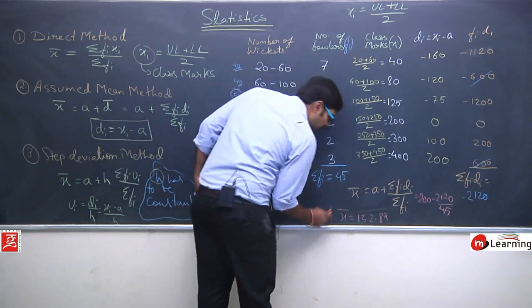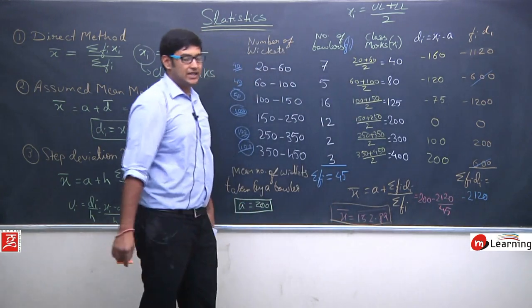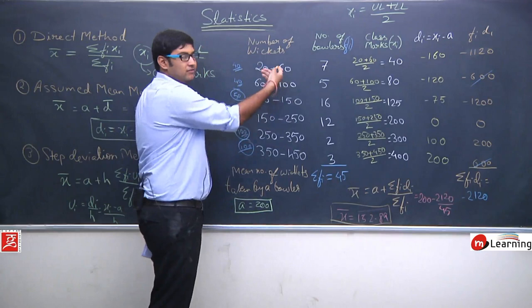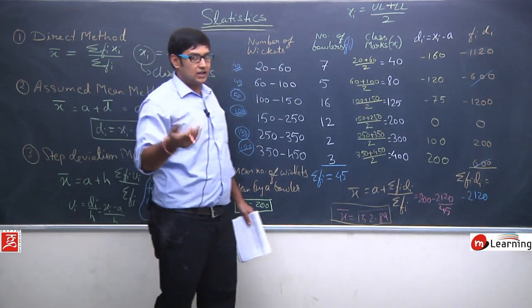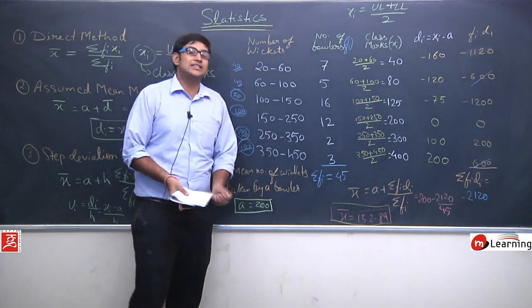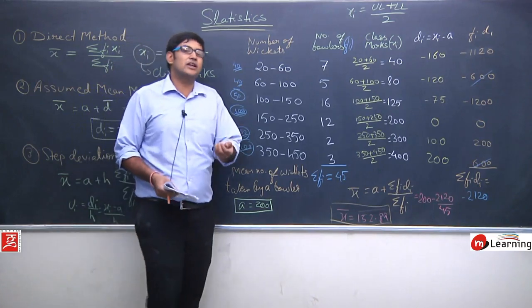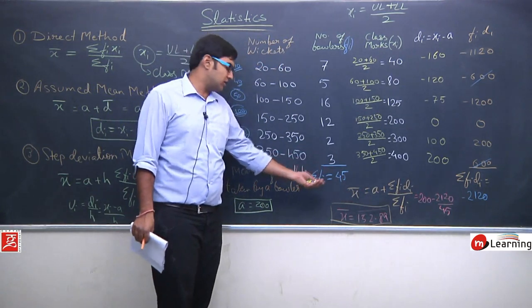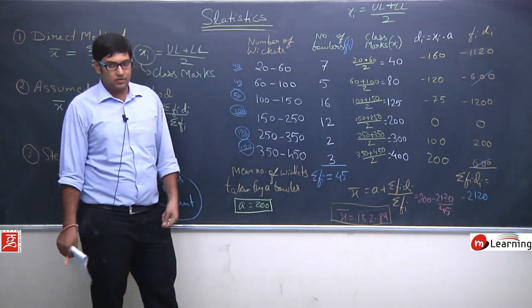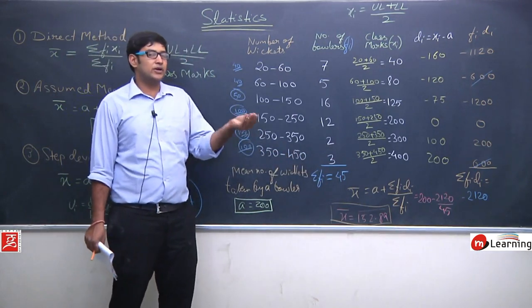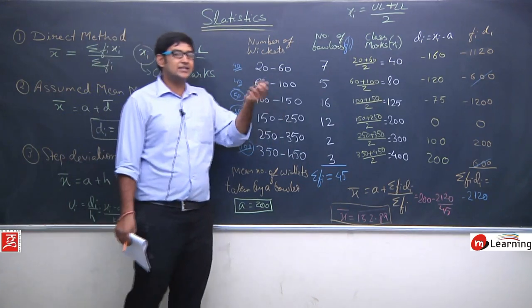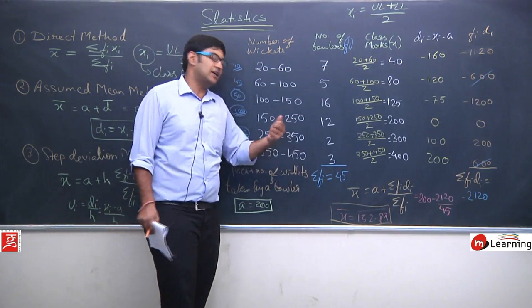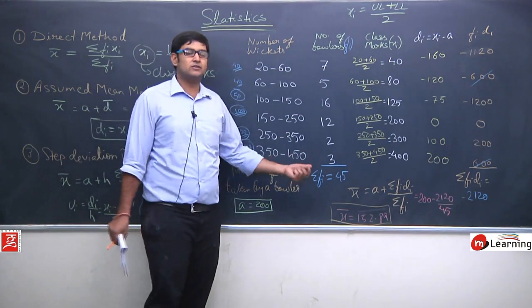So the mean is 152.89. This means the average number of wickets taken by each bowler is approximately 152.89 — or we can round to 152 since wickets cannot be in decimal. Some bowlers took more, some took less, but when we average all of them, we get 152.89.